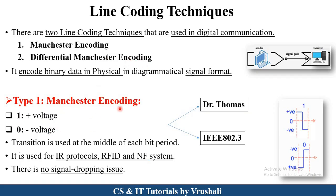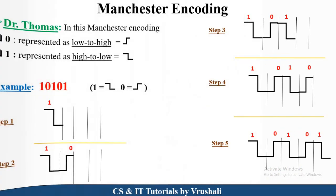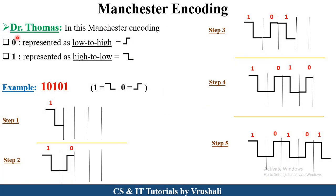Now let's discuss Manchester encoding technique. In this technique, 1 is represented by positive voltage and 0 indicates negative voltage. This Manchester encoding representation is shown in two ways: first the Dr. Thomas way and second the IEEE way. Their representation is different but the final result is the same. This Manchester encoding is generally used for IR protocols, RFID systems, and some NFC systems. Now in Dr. Thomas representation, 0 is represented by low to high signal and 1 is represented by high to low signal. You have to remember these two symbols for 0 and 1.